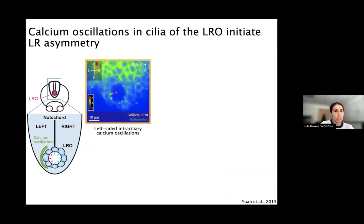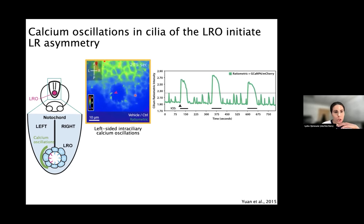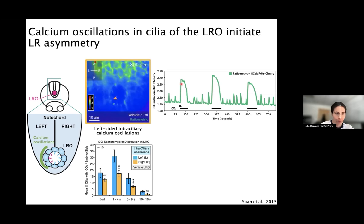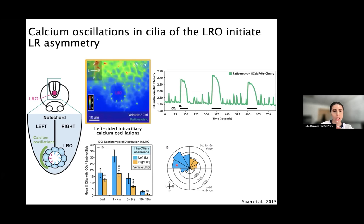In addition to this leftward flow, our group reported — using genetically encoded calcium indicators, which are fluorescent reporters that allow us to visualize calcium dynamics — one of the earliest molecular events taking place to break the initial left-right symmetry: calcium oscillations in the cilia on the left side of the structure. These oscillations, visualized as variations of fluorescence over time, are periodic, occurring every two to five minutes, mainly between the one and four somite stage, and primarily on the left anterior side of the structure.